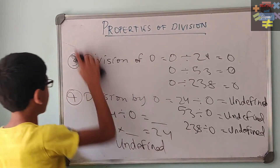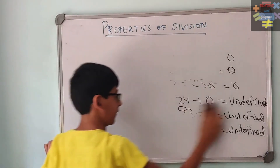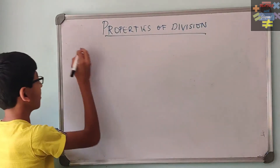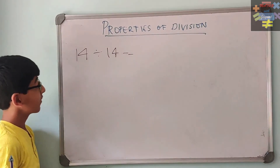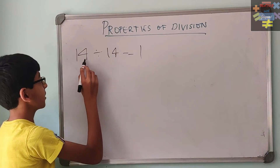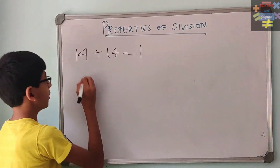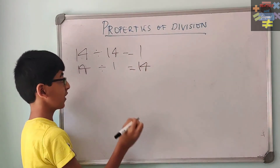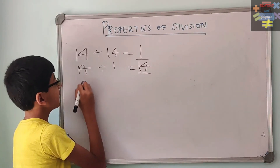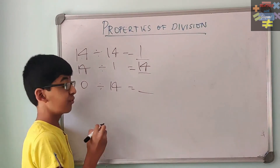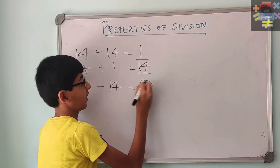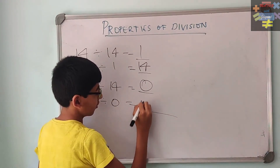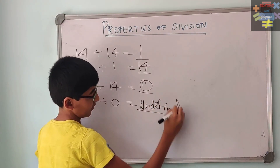Now let us solve a few questions. If the question is 14 divided by 14, what will our answer be? 1 — because if we divide any number by itself, our answer is going to be 1. What is 14 divided by 1? If we divide any number by 1, our answer is going to be the same number, so the answer is 14. What is 0 divided by 14? Since 0 is being divided by any number, the answer will be 0. And what is 14 divided by 0? We are going to call this not possible, or undefined.